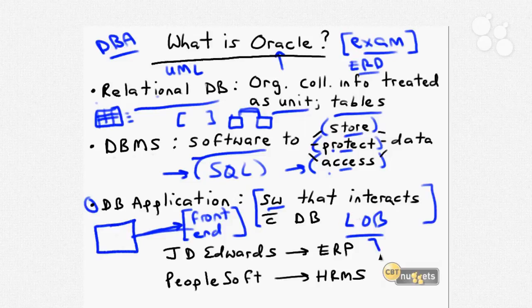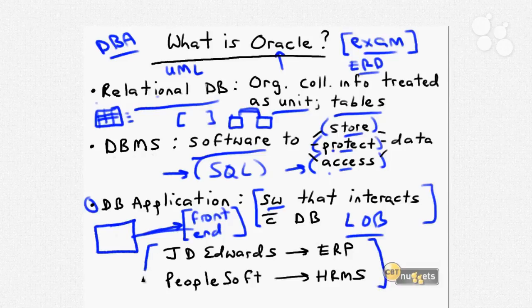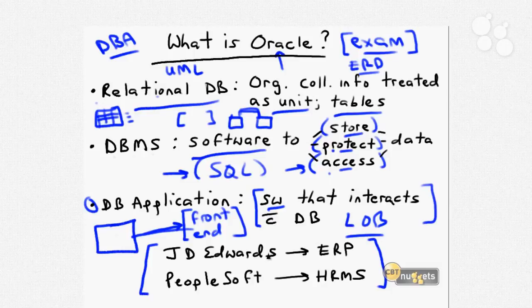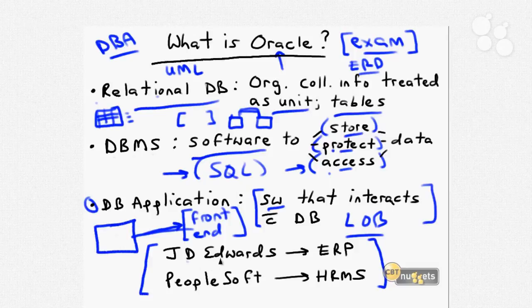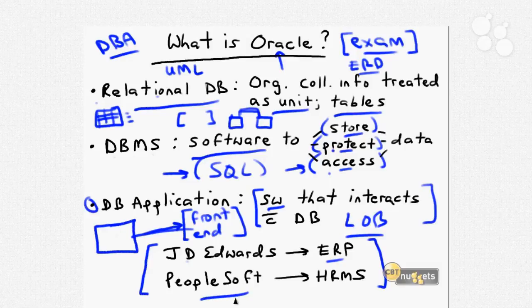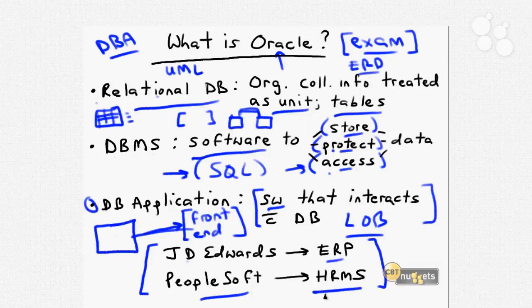Oracle themselves has made many acquisitions over the last several years. Some really popular business applications that rely upon Oracle are now actually owned and managed by Oracle itself. Two that come to mind include JD Edwards, which is an Enterprise Resource Planning or ERP software package, and PeopleSoft, which is known principally as the de facto Human Resources Management software package, also called HRMS.